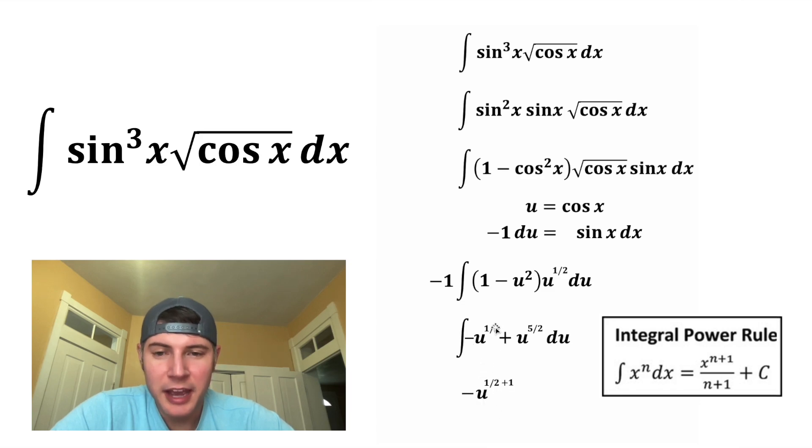So for this first term, we're going to add one to the exponent, which would be two over two, which becomes three over two. And then we want to divide by that three over two. Plus, then we're going to do it to the other one. We're going to add one to it, which ends up giving us seven halves. And then we're going to divide by seven halves. And you never want to forget the plus c.